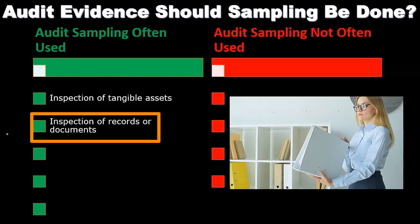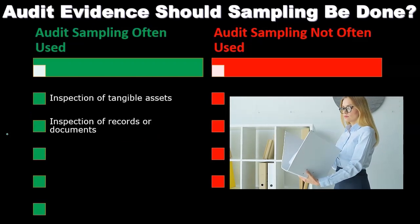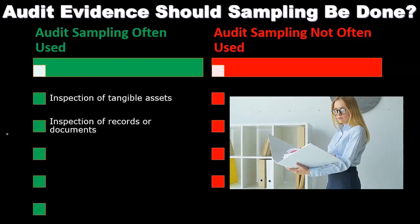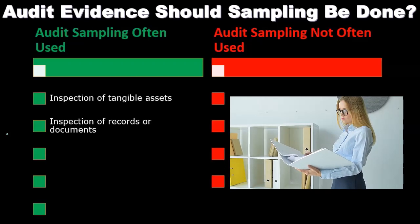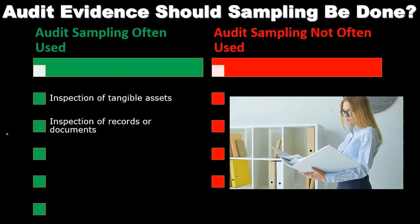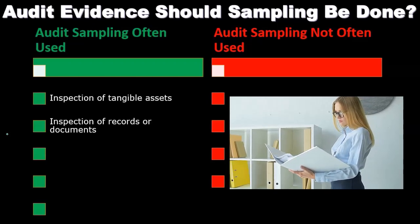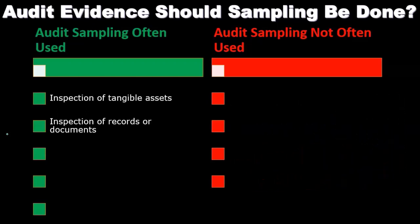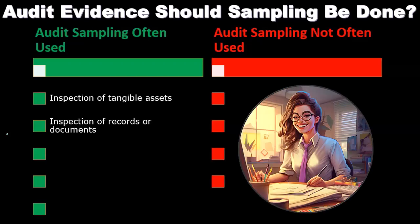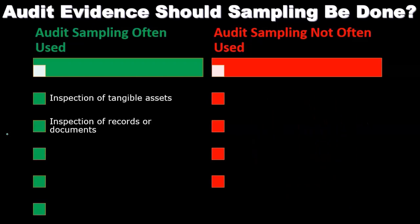Inspection of records or documents is obviously going to be one of the main items that we're going to use sampling for. If we want to inspect some type of documents such as invoices or bills, we are clearly not going to do that for all of the invoices or bills — we're going to have to use some type of sampling method to determine which items we want to sample, pull those items, and then inspect some type of sample in those circumstances.